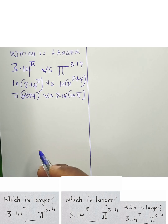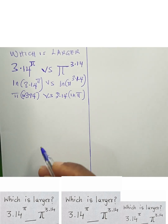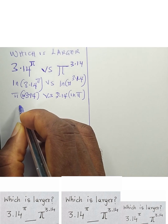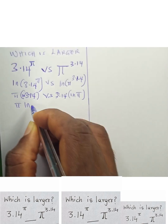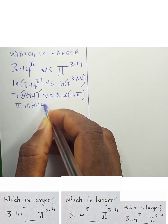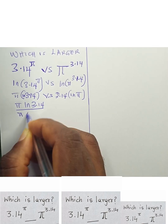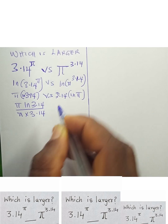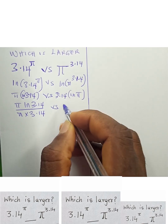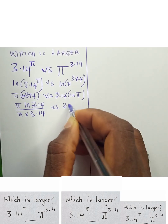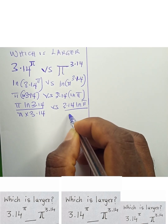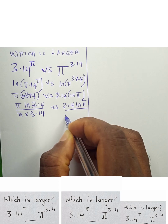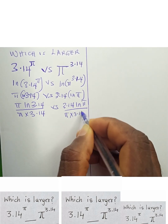The next thing we are going to do is divide both sides by pi times 3.14. So if we divide both sides by pi times 3.14, we get pi · ln(3.14) divided by (pi × 3.14) versus 3.14 · ln(pi) divided by (pi × 3.14).